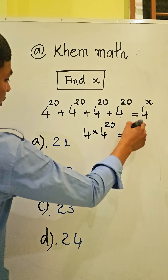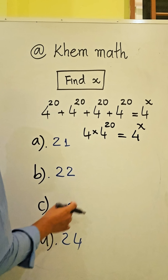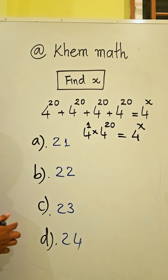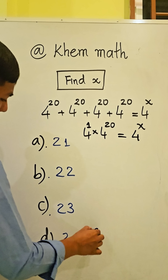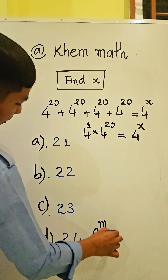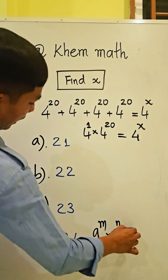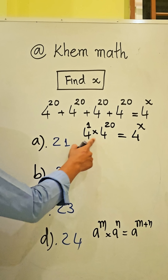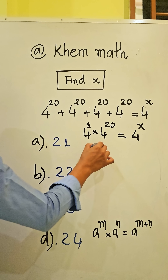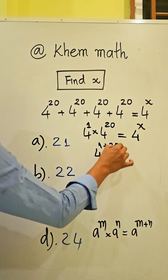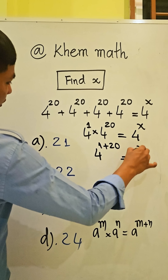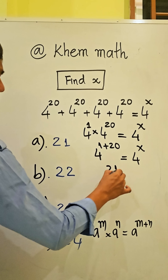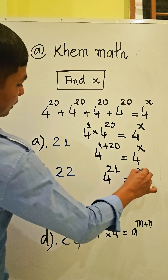This equals 4 power 8. Here, 4 is power 1 but we don't write it. We use the formula: a power m times a power n equals a power m plus n. So here we get 4 power 1 plus 20, which equals 4 power 21.